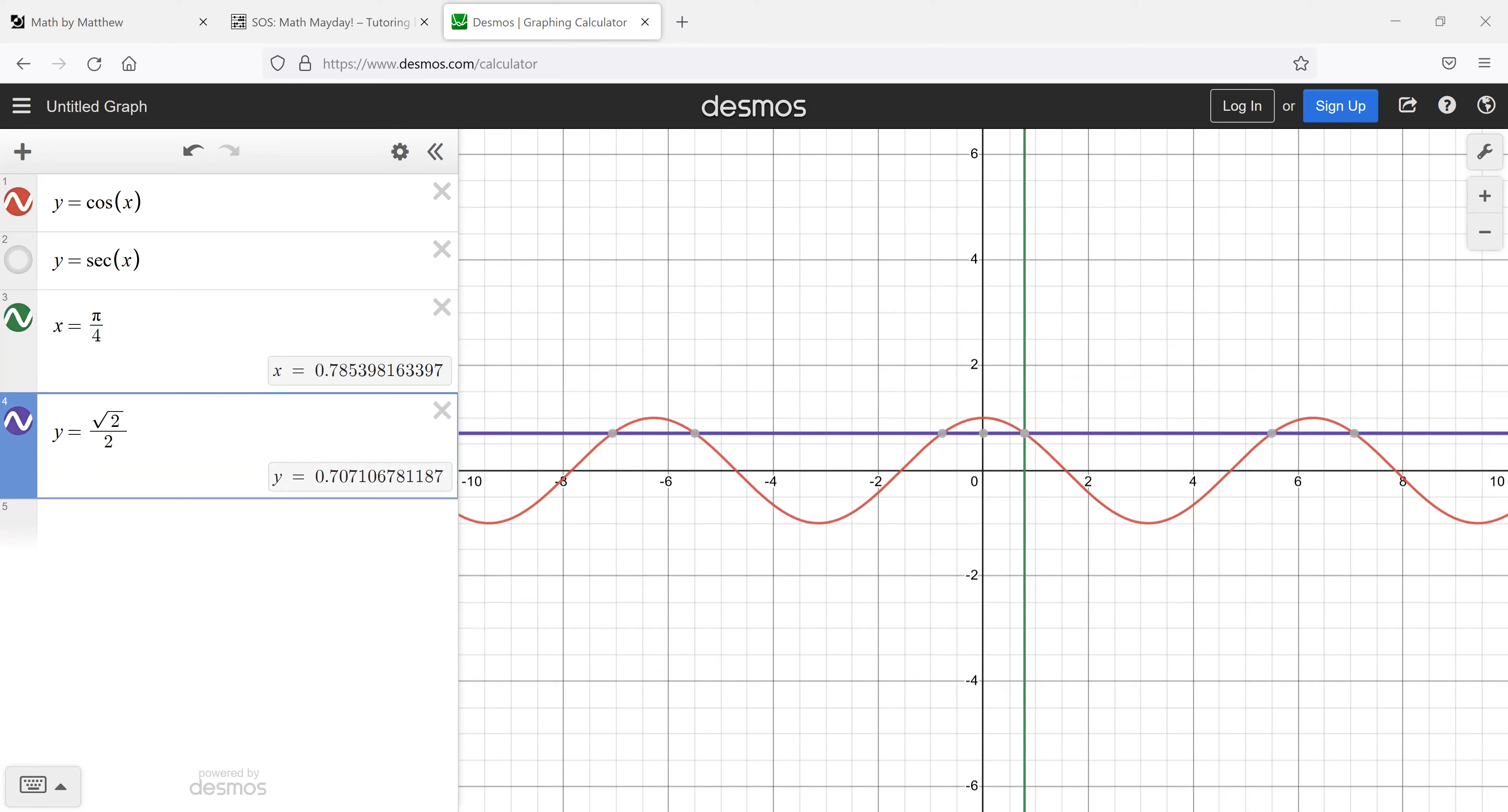And so if we keep going here, let me get rid of this one on the left. If we go down to π over two, what's the y value there? Zero, zero. Yeah.